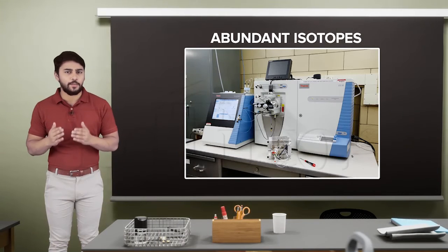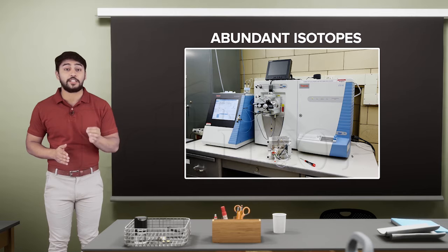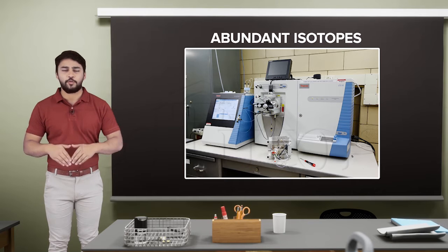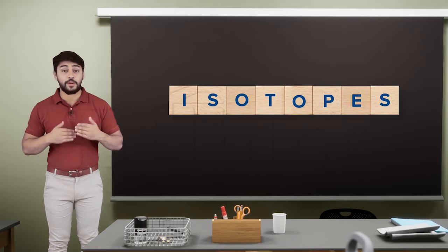The properties mentioned are generally those of the most abundant isotope, and this abundance is calculated using a process called mass spectrometry, which we will discuss in the upcoming videos. If we are to talk about the present, there exist 280 different isotopes in nature, including 40 radioactive ones.